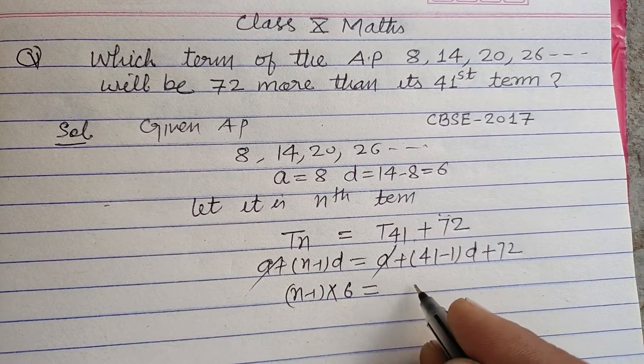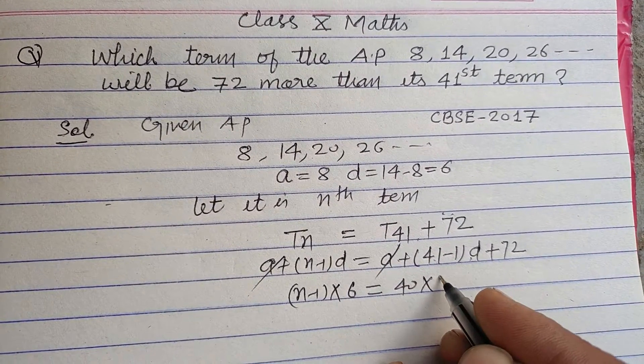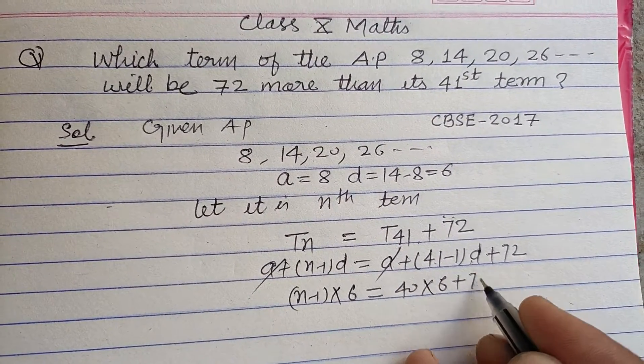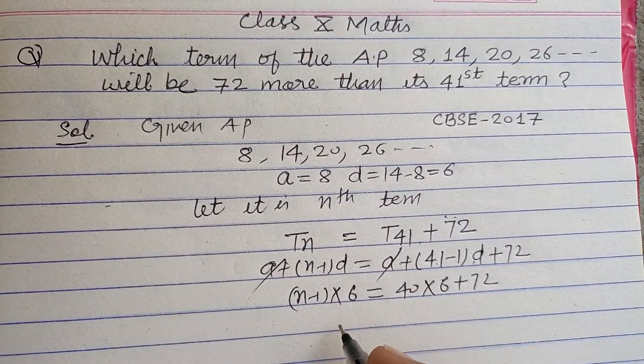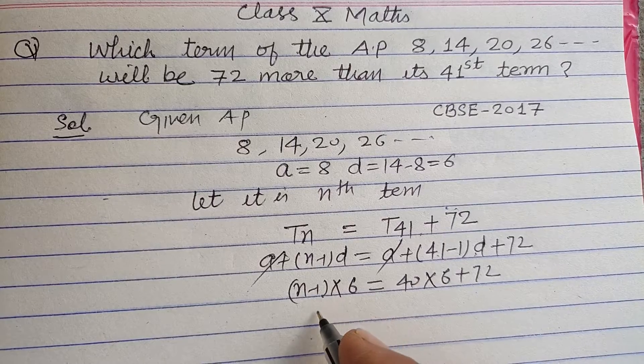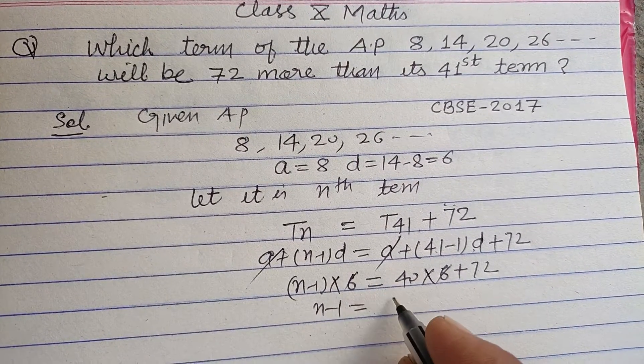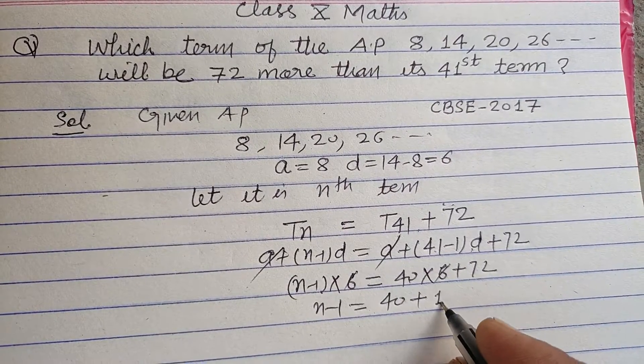Substituting d equals 6: (n-1) × 6 = 40 × 6 + 72. Every term is divisible by 6, so we can write n - 1 = 40 + 12.